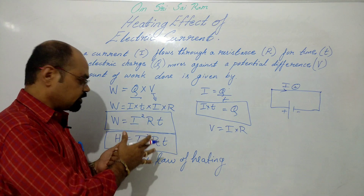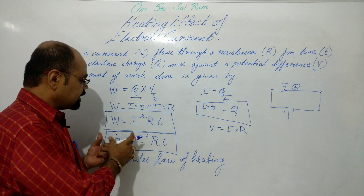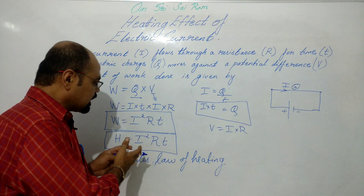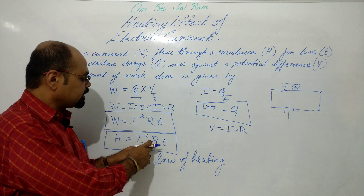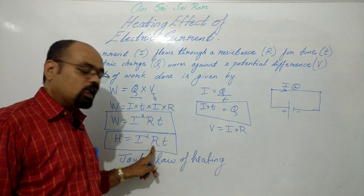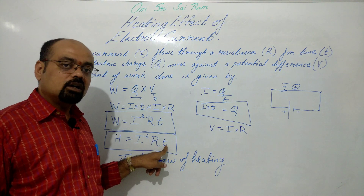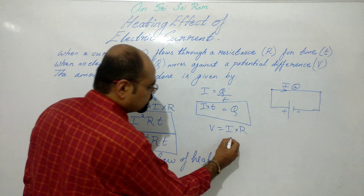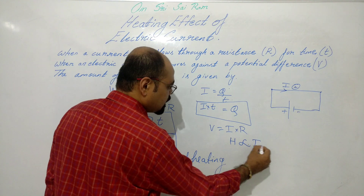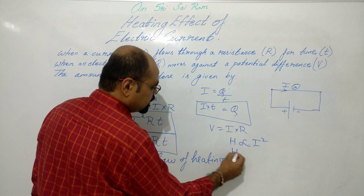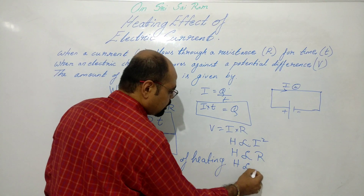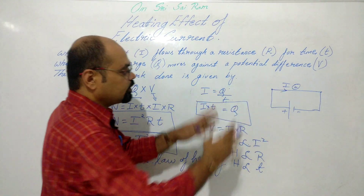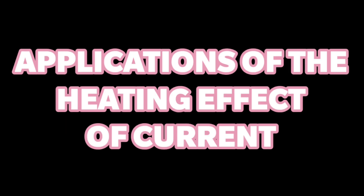Joule's law of heating states that the heat produced in a circuit or in any electrical equipment is directly proportional to the square of current. Heat is directly proportional to resistance, and heat is directly proportional to the time during which the current flows: H ∝ I², H ∝ R, H ∝ T.